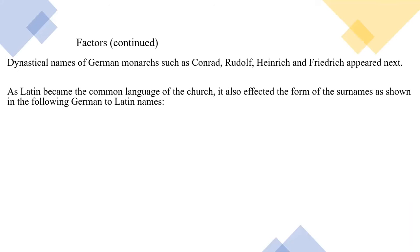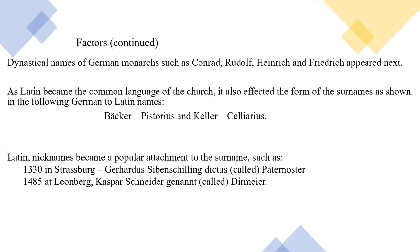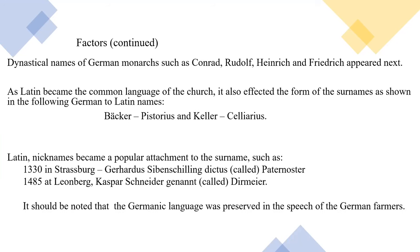The surname Becker became Pistorius, and Keller became Seliarius. A handout giving names from German to Latin and Latin to German is included with this lecture. Latin nicknames became a popular attachment to the surname — for example, in 1330 in Strasbourg, a person named Gerhardus Siebenschilling was called Pater Noster, and in 1485 at Leomberg, a Kasper Schneider was called Diermeier. It should be noted that the Germanic language was preserved in the speech of the German farmers. Examples of Prussian given names included Friedrich, Wilhelm, Friedrich Karl, and Albrecht.